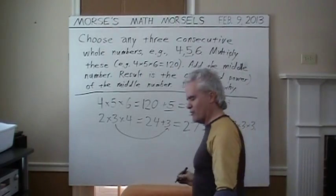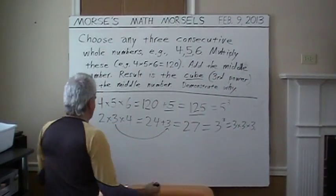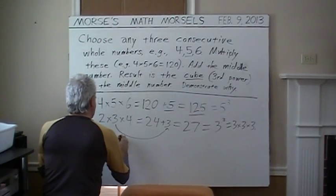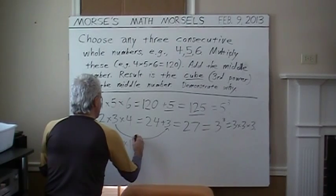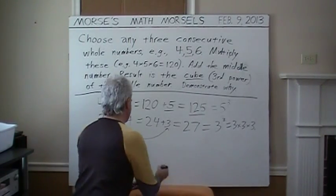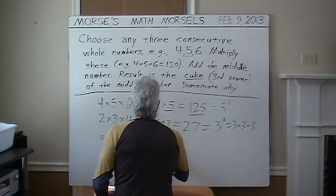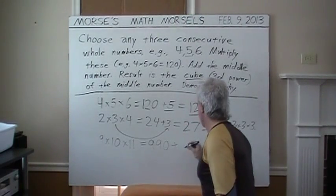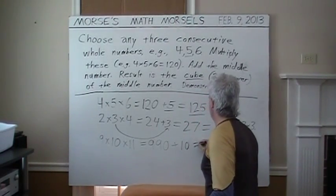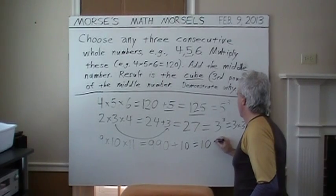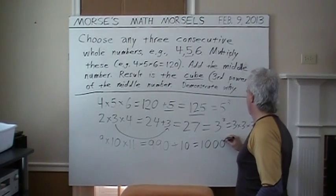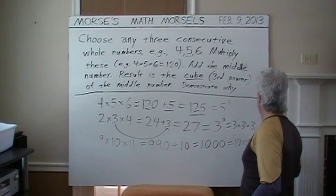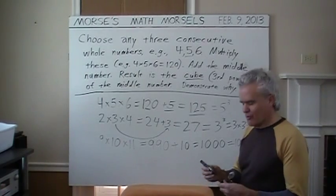I'm going to try it once more. This time with some slightly larger whole numbers. I'm going to go with 9 times 10 times 11. That's a pretty easy one. 9 times 10 is 90. 90 times 11 is 990. And what do I add? Yep, that middle number is 10. And I get what is probably a familiar cubic number, 1,000. Which is the 10 times 10 times 10. That seems to always work.